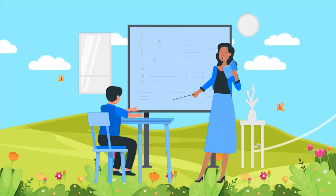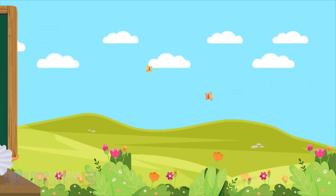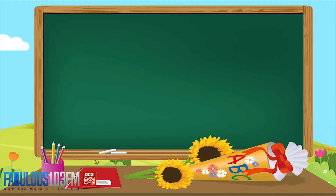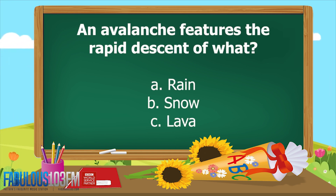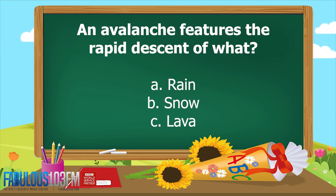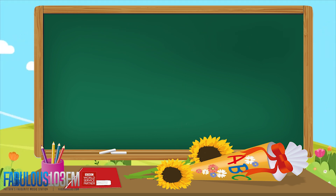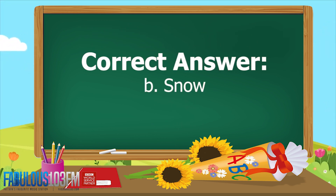So the first one was: an avalanche features the rapid descent of what — is it a) rain, b) snow, or c) lava? And the correct answer is b) snow.